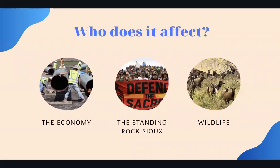So who does the Dakota Access Pipeline affect? Well, first it affects the economy. The economy is the system of how money is used and made within our communities. We are part of the economy, so by creating the Dakota Access Pipeline, this creates jobs, and that is a positive for our economy. Another group that this affects is the Standing Rock Sioux. As I mentioned before, this directly affects them because the pipeline would go beneath their water source. So if there were to be an oil spill or a leak, this would go directly into one of their resources that they need for daily life.